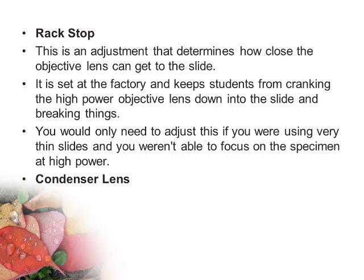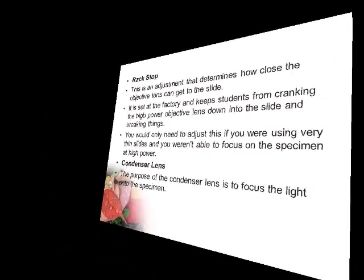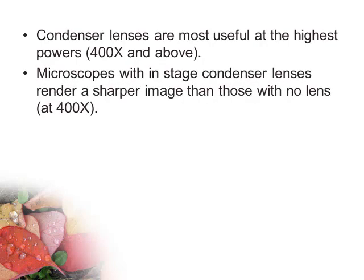The condenser lens focuses the light onto the specimen. Condenser lenses are most useful at the highest powers — 400x and above. Microscopes with a stage condenser lens render a sharper image than those with no lens at 400x or higher.